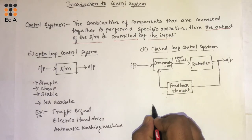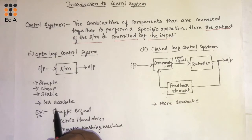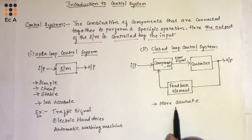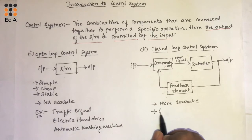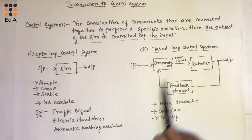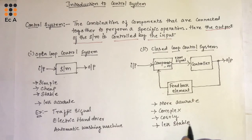The advantage of the closed loop control system is that it is more accurate compared to the open loop control system. Since the output is continuously monitored, we get high accuracy. However, compared to the open loop control system, it is complex in construction and therefore costly. And since more components are added, it is less stable compared to the open loop control system.